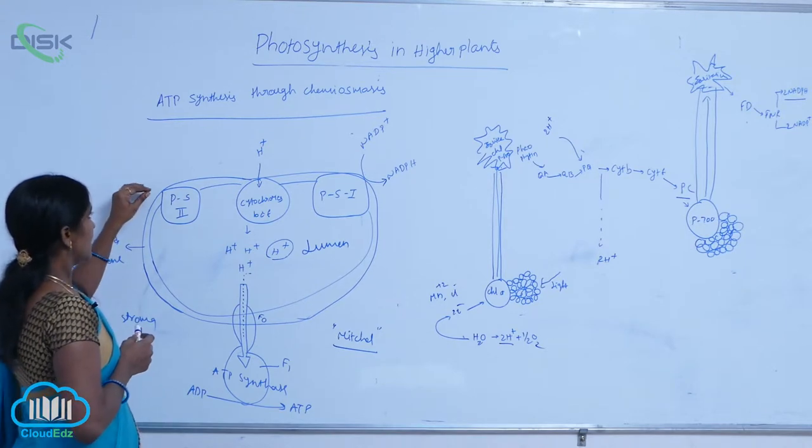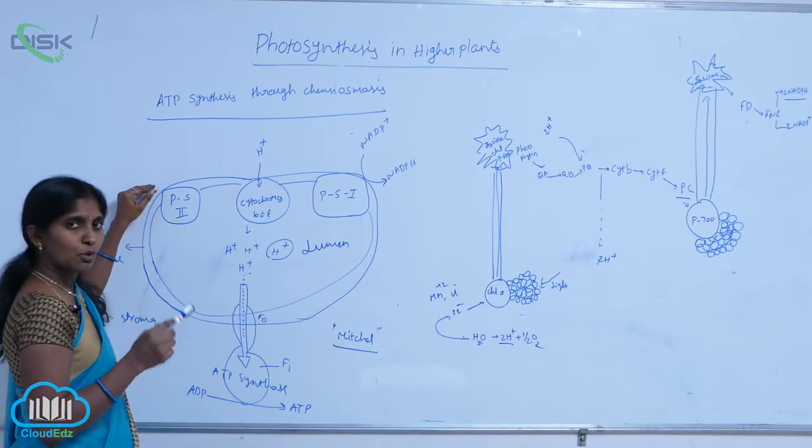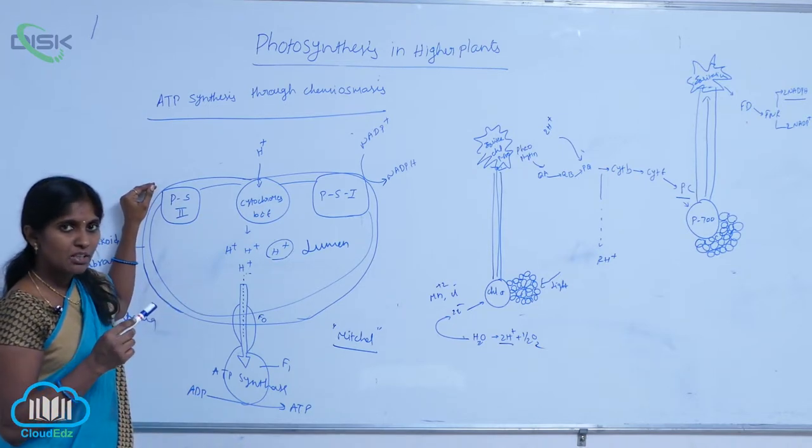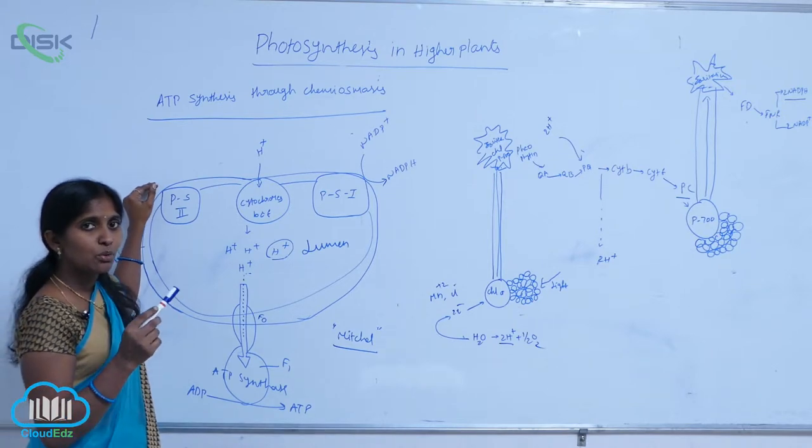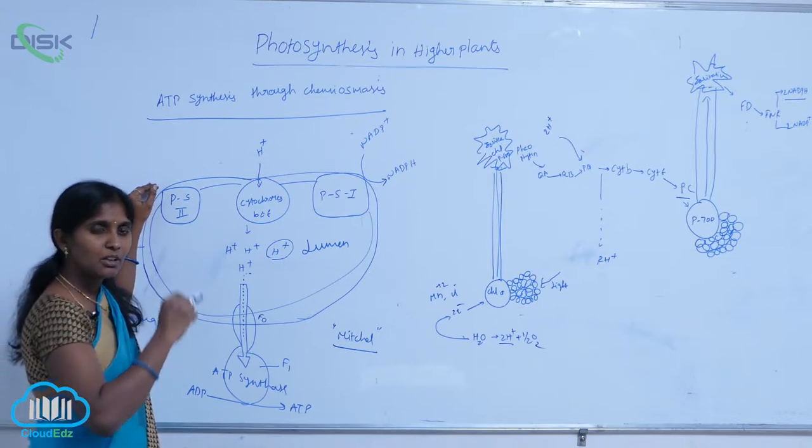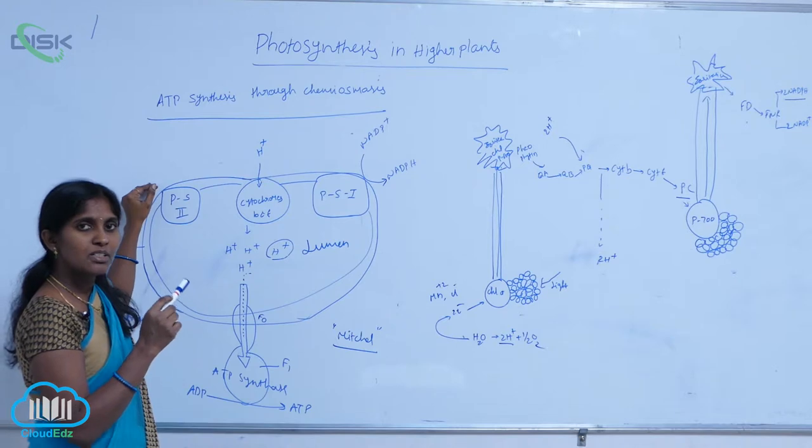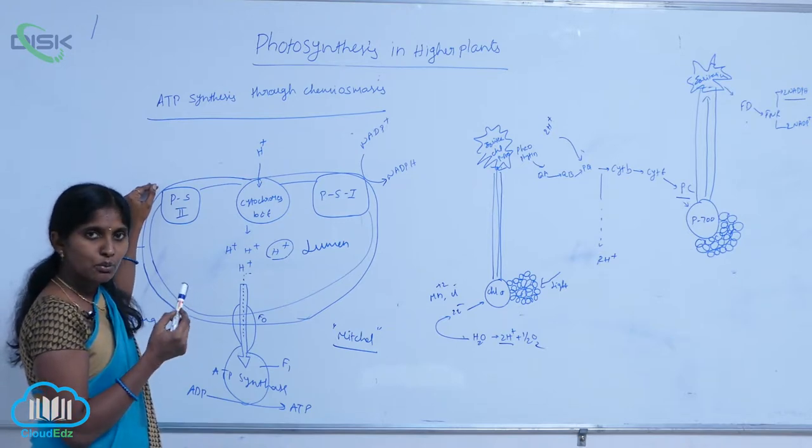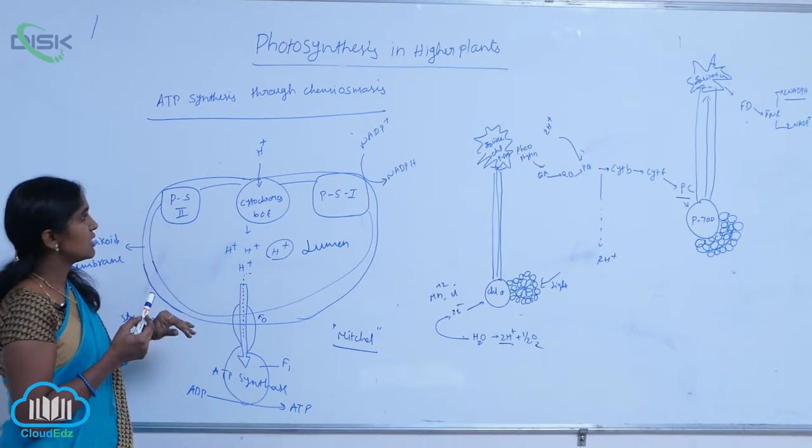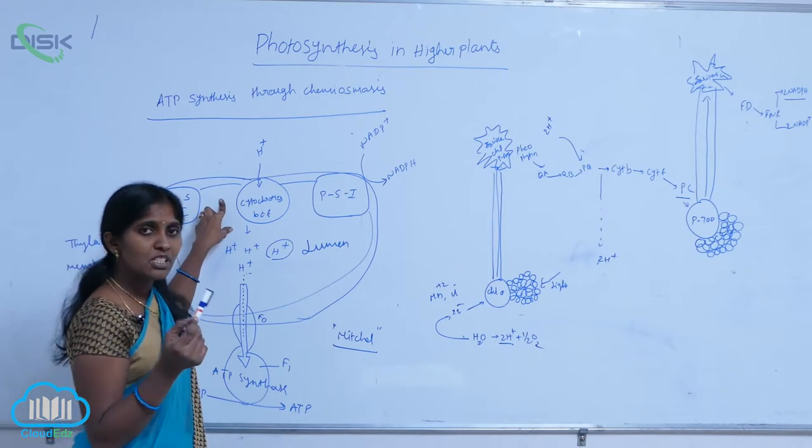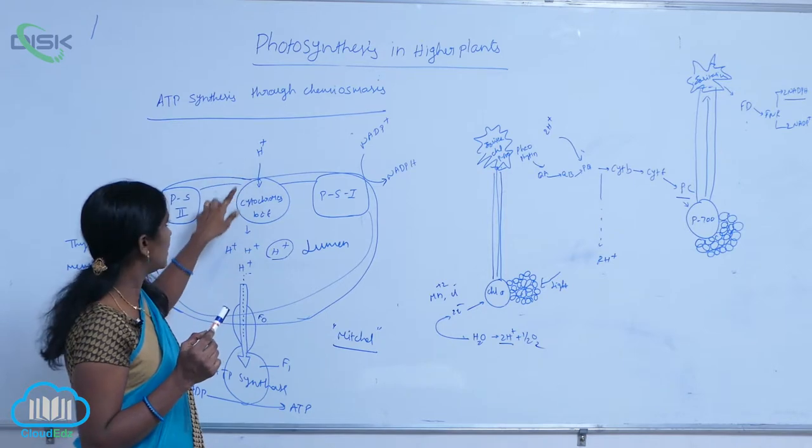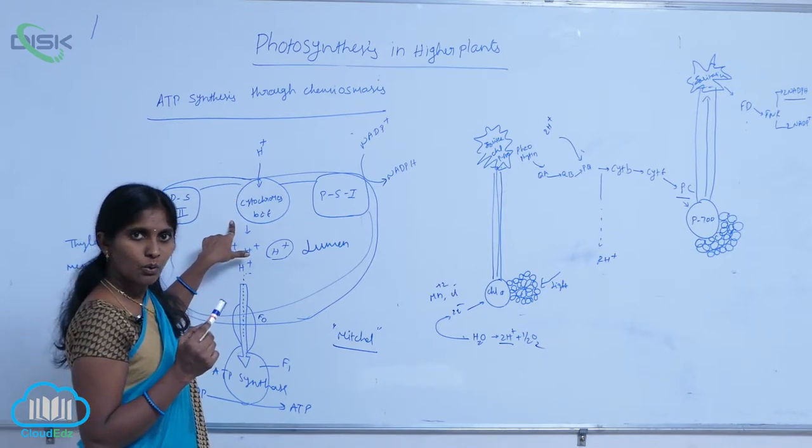First, when non-cyclic photophosphorylation occurs, the water molecule is cleaved, resulting in production of two electrons and two protons. The released electrons enter the non-cyclic electron transport chain, but the protons accumulate in the lumen. Additionally, protons present in the stroma enter the lumen through the quinone cycle.